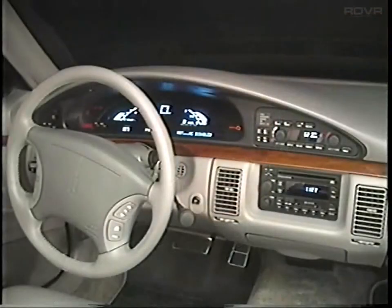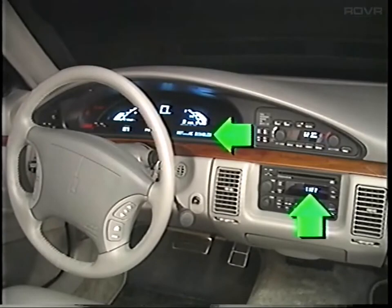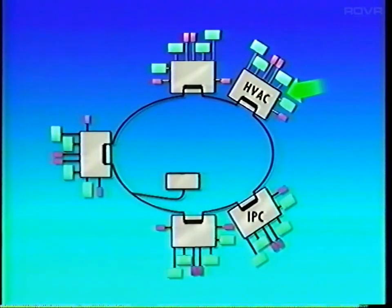One more point before we move to the third kind of bus. For the 88, 98, and Aurora, the HVAC programmer is on both the EWERT bus and the E&C bus. When a module is on both buses, it may be used to transfer information from one to the other. For example, on 88s and 98s that have a driver information center, the DIC uses clock timing from the radio for DIC time and date. The radio's clock timing switches from the E&C at the HVAC programmer, then rides on the EWERT to the IPC, which delivers it to the DIC. Get used to that idea of message transfer from bus to bus.